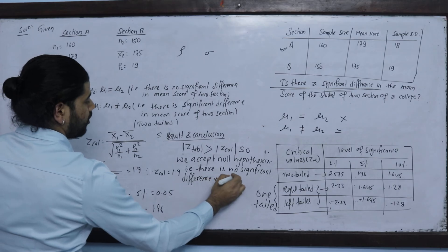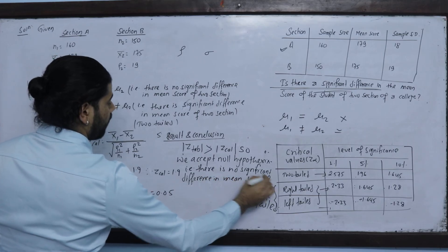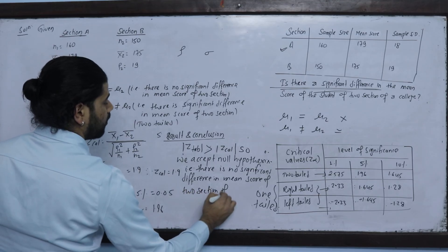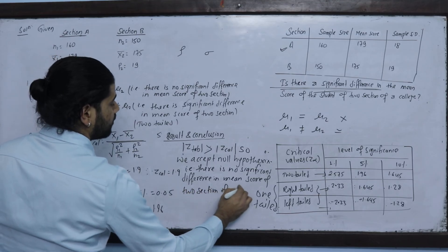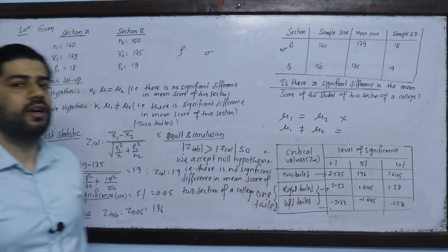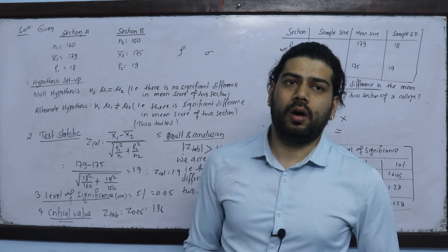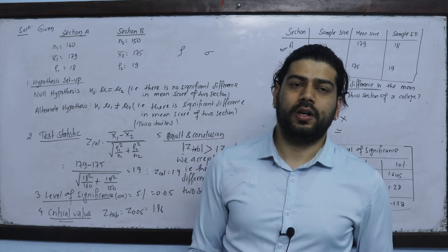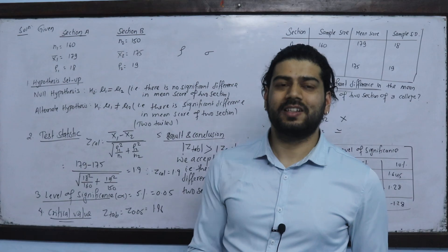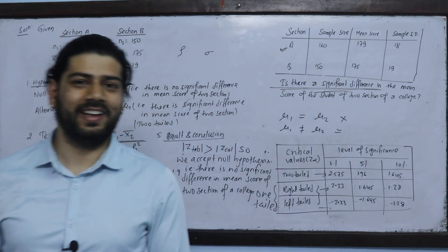There is no significant difference in the mean score of the two sections of the college. So we can see that the mean scores of the two sections are not different — they are essentially the same. This completes the test of significance for the difference between two means. We will solve more problems in the next class. Thank you.